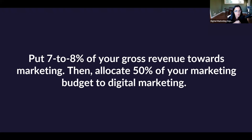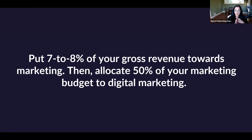You want to put 7% to 8% of your gross revenue toward marketing, then allocate 50% of that marketing budget to digital marketing. This number changes depending on the industry, the services or products you provide, and your location. You might go from 50% allocation to digital all the way to 80% or sometimes 100%. It all depends on what you sell, who you're selling it to, from what location, and how often.